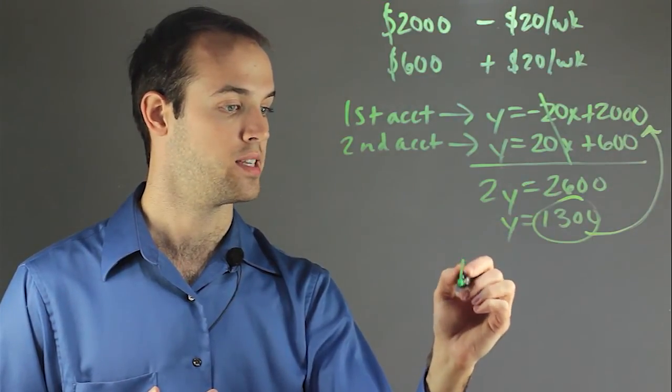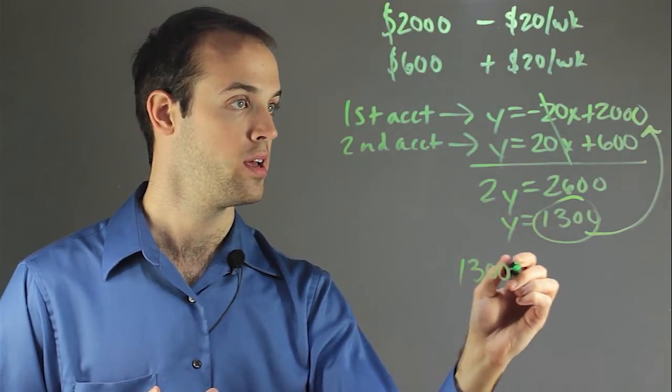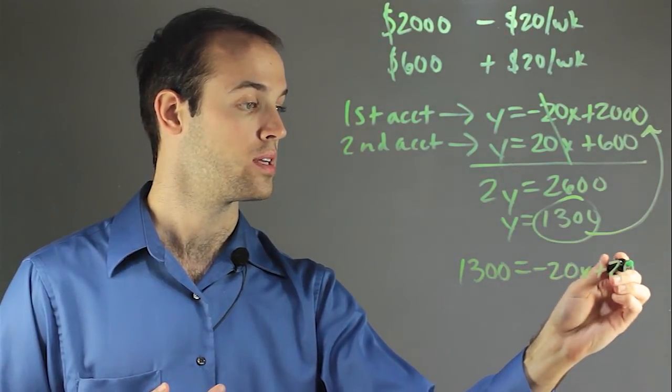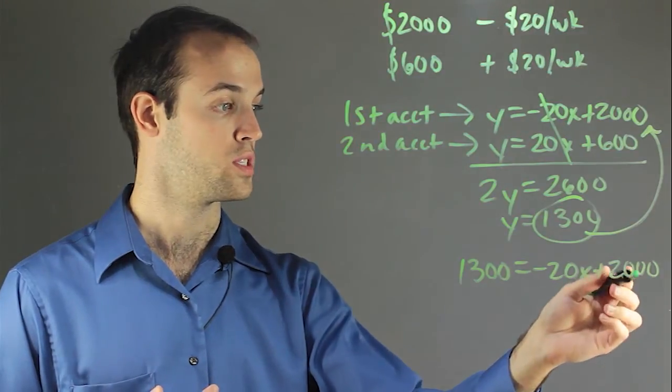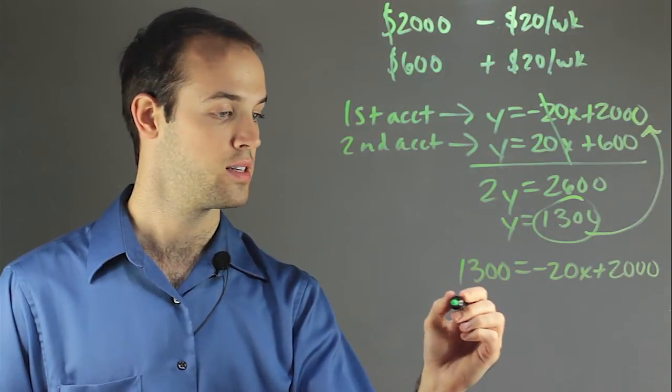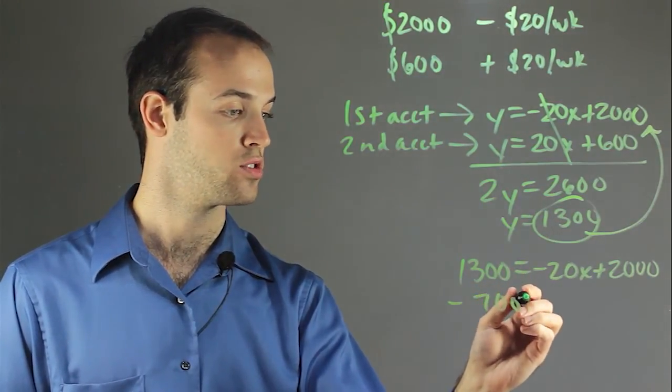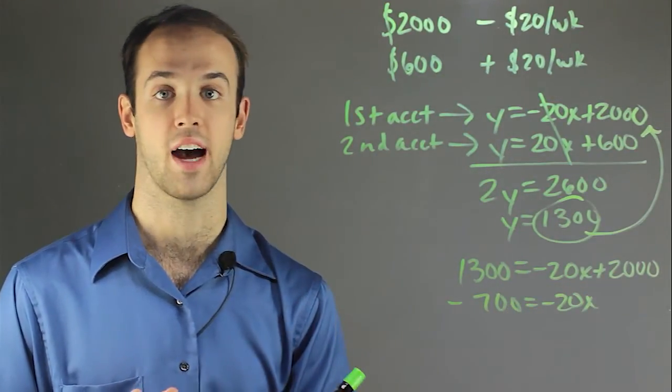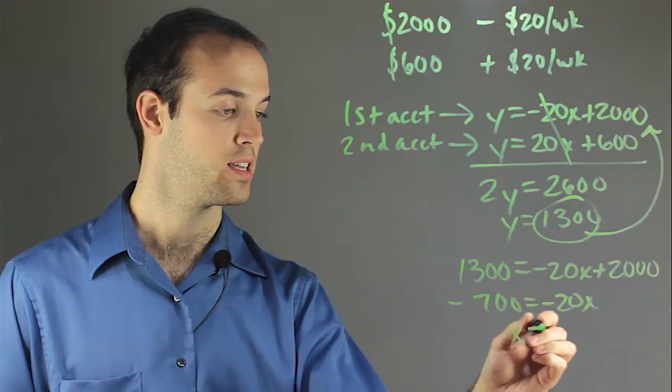So I get $1,300 equals negative 20x plus 2,000. So the next thing I want to do is subtract 2,000 from both sides which gets me negative 700 is equal to negative 20x. And then I'll divide both sides by negative 20 to get that x equals 35.